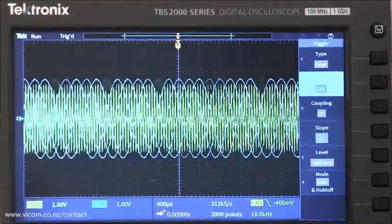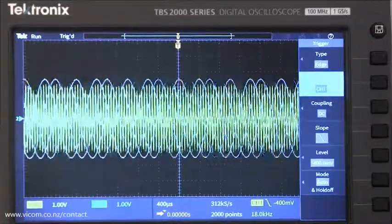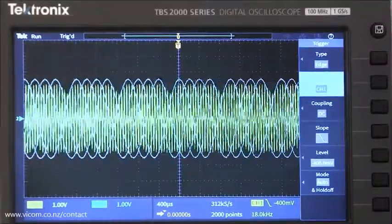For example, it can be difficult to get a stable display on an AM signal like this one. But if you can connect the modulating signal or envelope and use it as a trigger source, it's easy to get a clear picture.